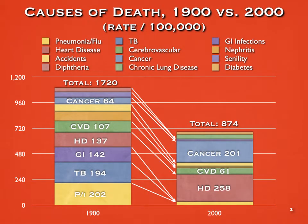Here you can see a graph comparing the causes of death in 1900 with the causes of death in the United States in 2000, and you can see a dramatic shift. On the lower left, in 1900, the three main causes of death in the United States were tuberculosis, gastrointestinal infections including things like cholera, and pneumonia and flu — and they were a much more significant cause of death than a hundred years later. You can see a dramatic shift over the course of the 20th century in the burden of disease that Americans faced.